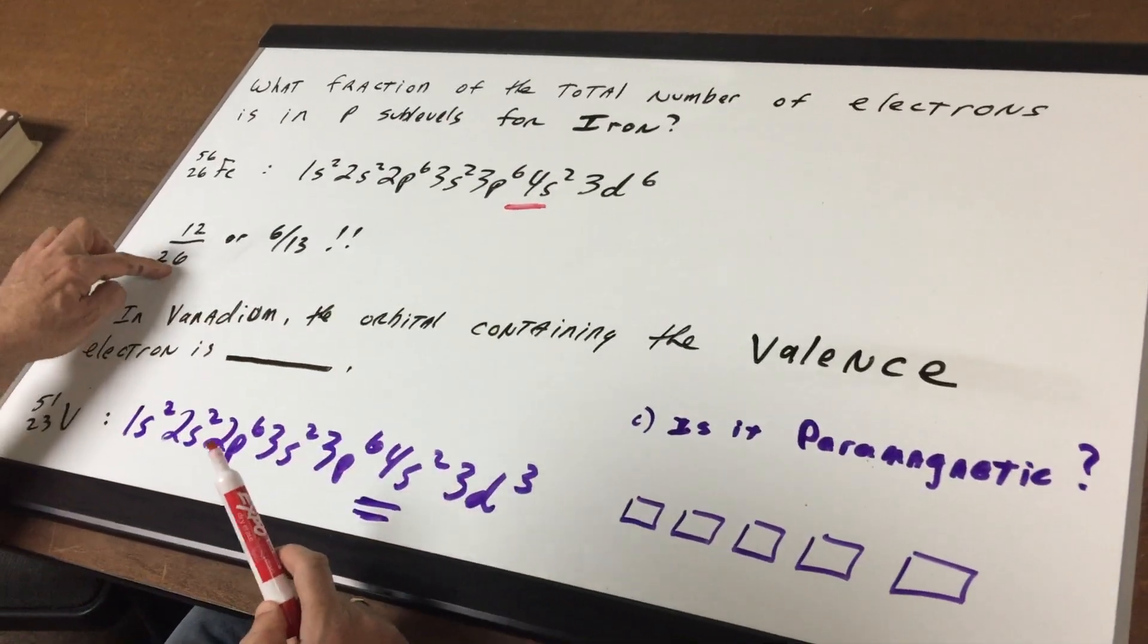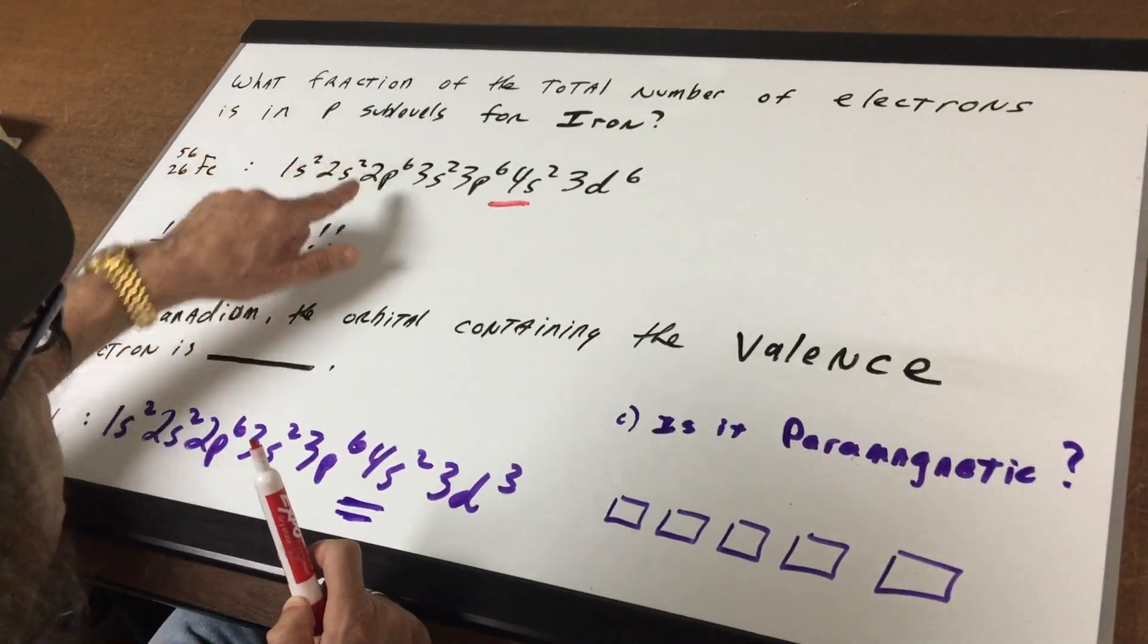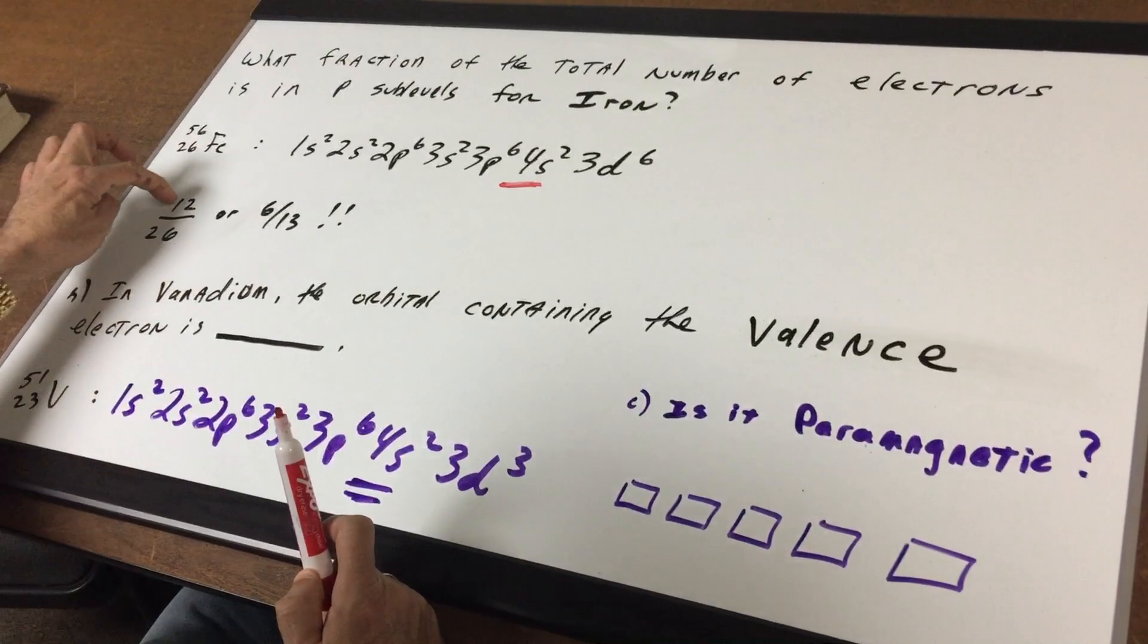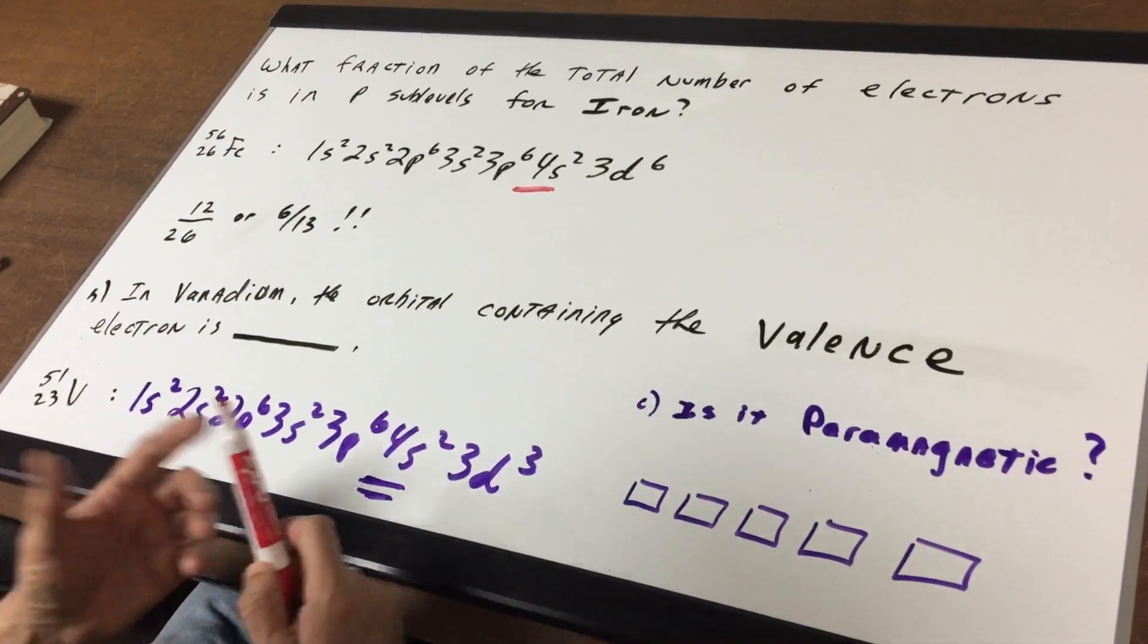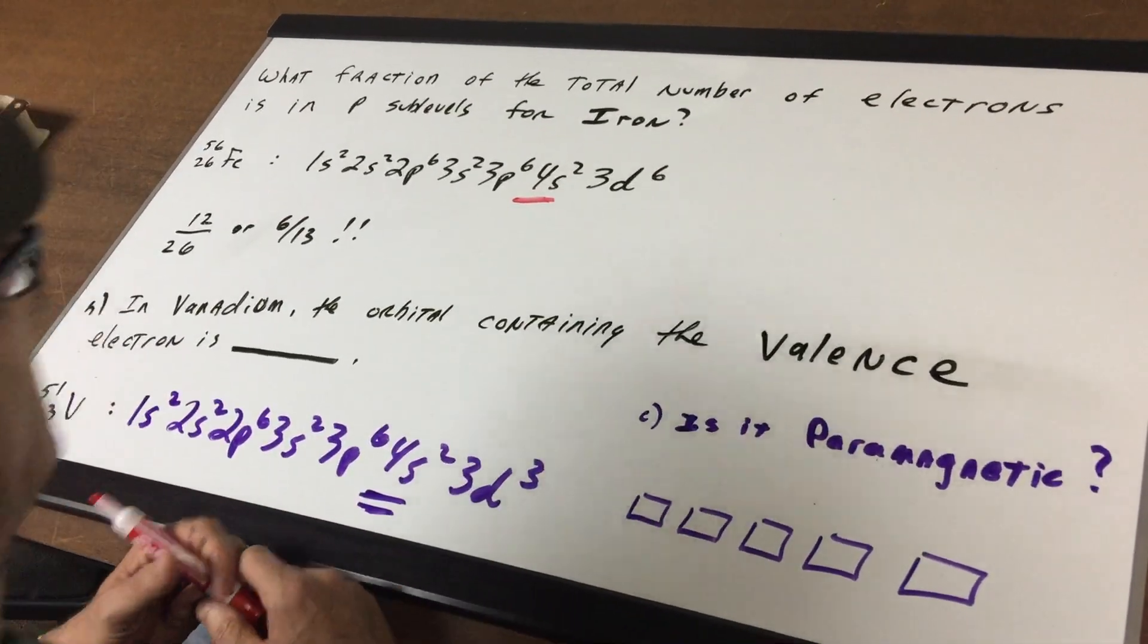Now we have total of 26 electrons. How many of these electrons are in the P sublevels? Well there's six from here, six from here gives me 12. 12 out of the 26 or six thirteenths would be the fraction of the total number of electrons that's in the P sublevels.